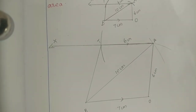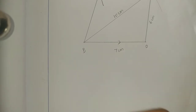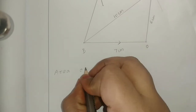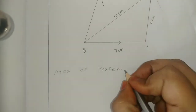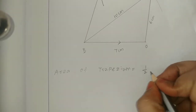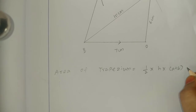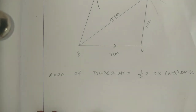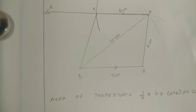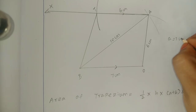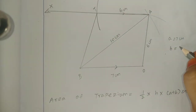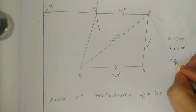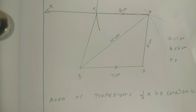Okay, now we have the calculation. Area of trapezium — the formula is: area of trapezium equals half into h into (a plus b) square units. Here, a and b are the parallel sides. a is 7 and b is 6 centimeters.